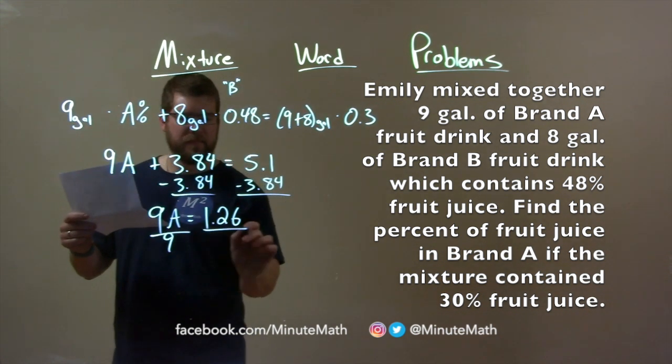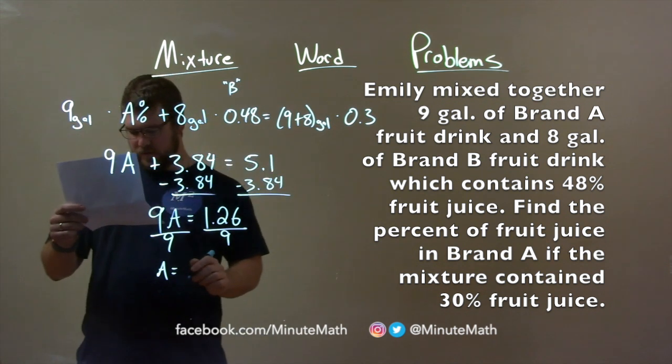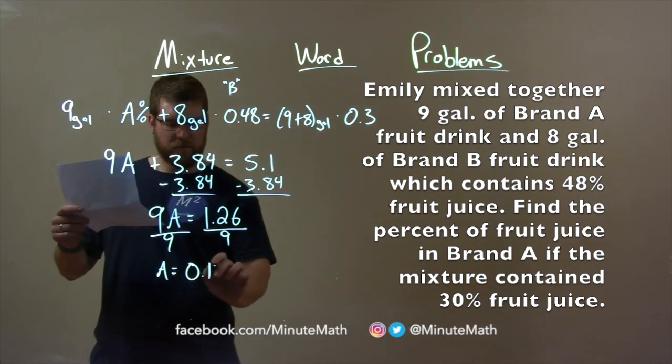Divide both sides by 9, and we get the decimal for A, which is 0.14,